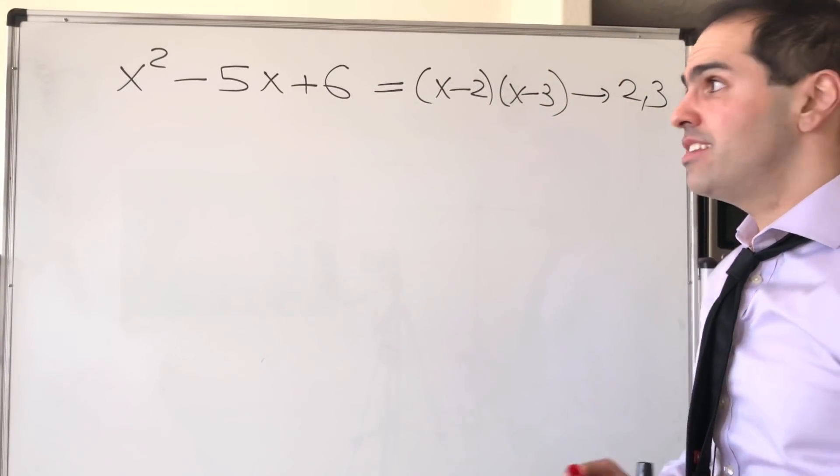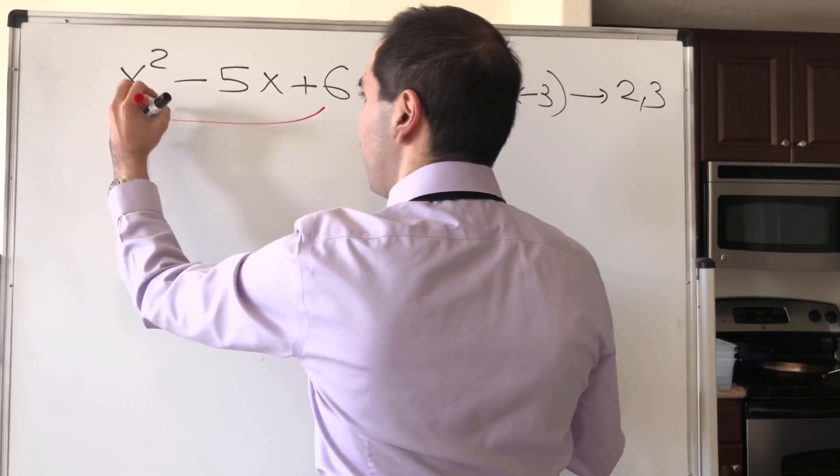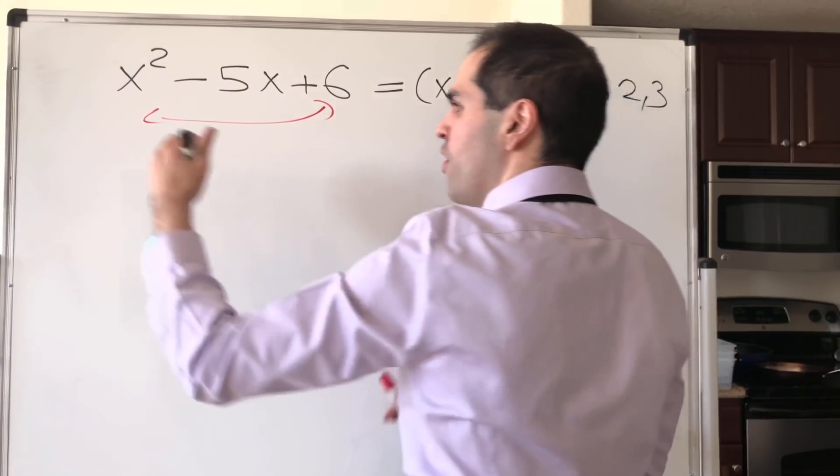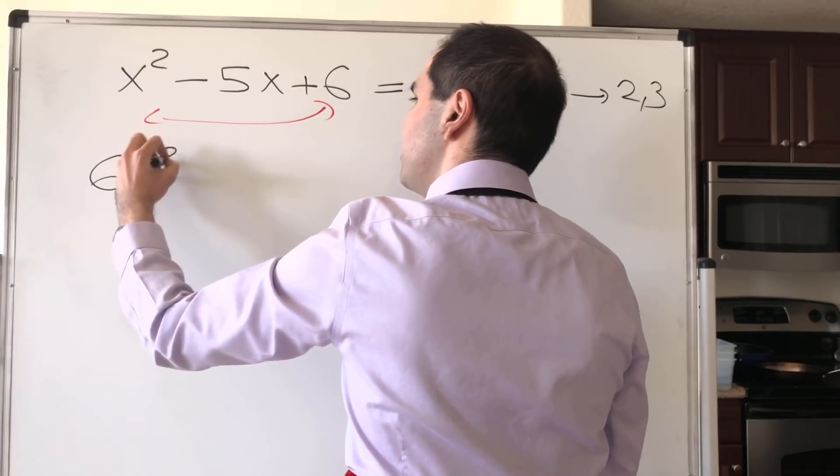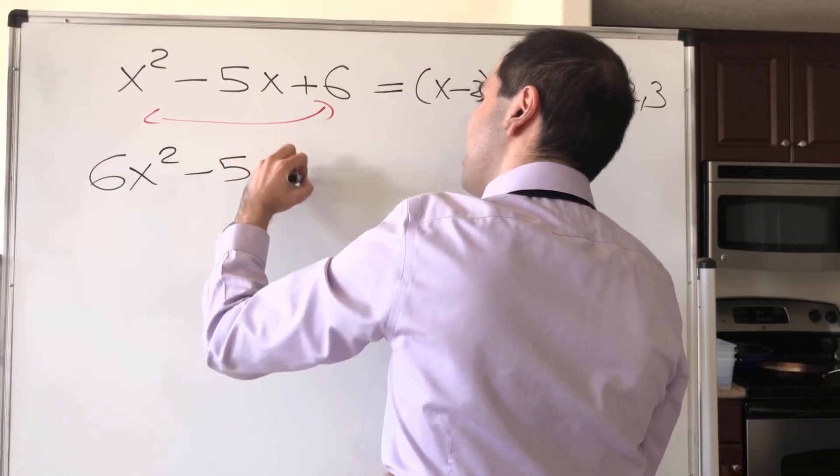But what if, instead, you consider the reverse polynomial where you swap the coefficients? For instance, 6x squared minus 5x plus 1.